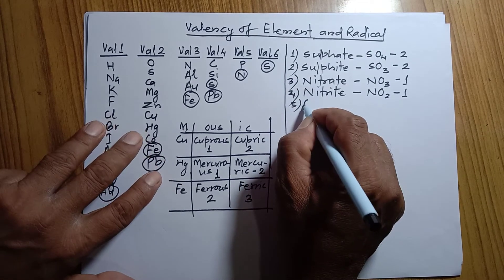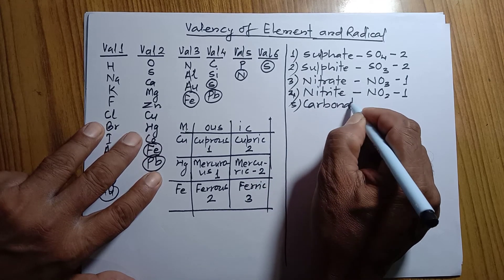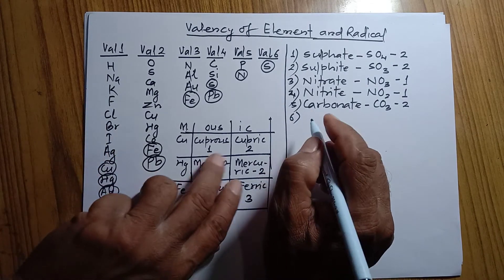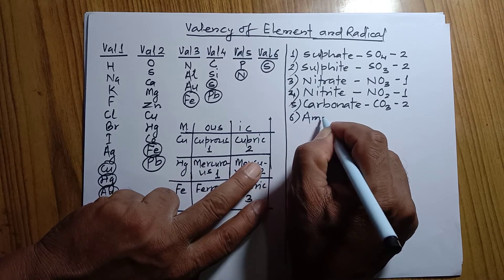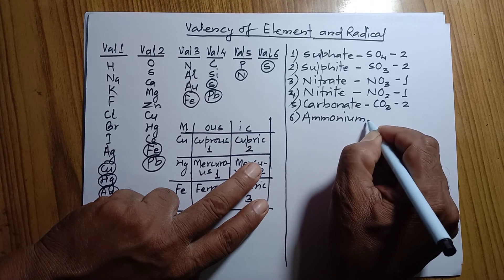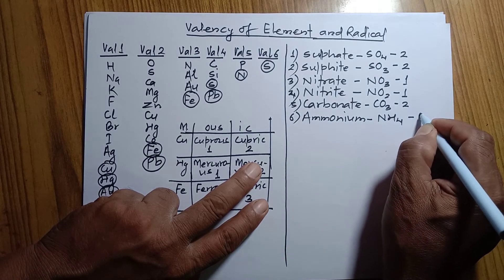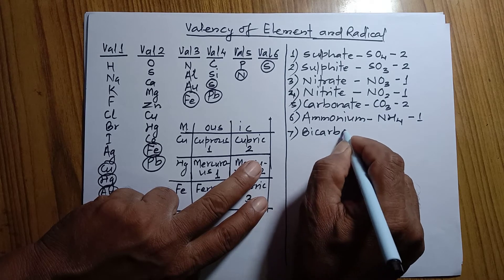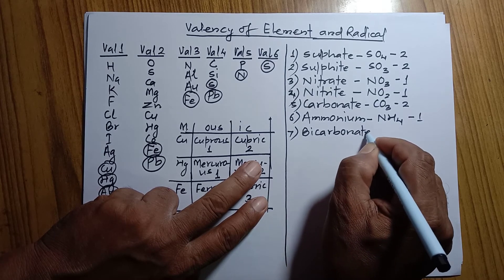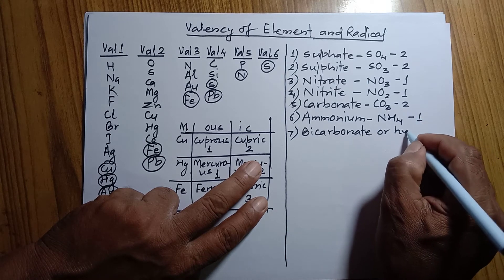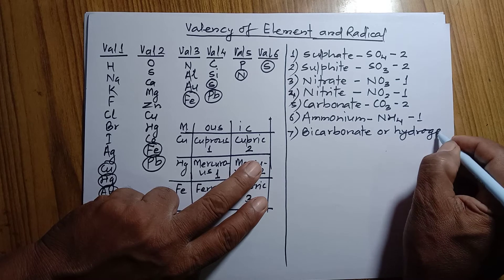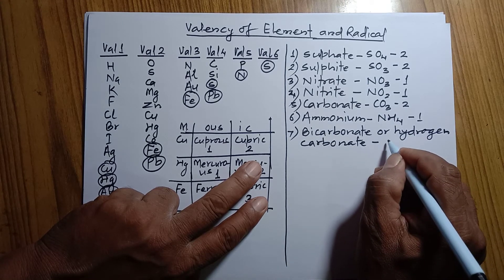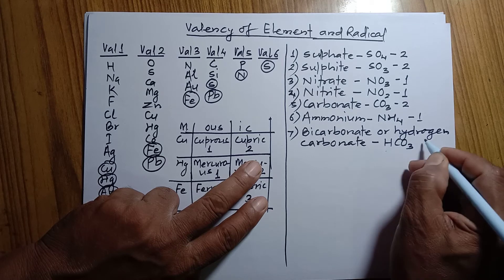Carbonate (C-A-R-B-O-N-A-T-E): its formula is CO₃, valency is 2. Ammonium (A-M-M-O-N-I-U-M): formula is NH₄, valency is 1. Bicarbonate — sometimes called hydrogen carbonate — its formula is HCO₃ and valency is 1.